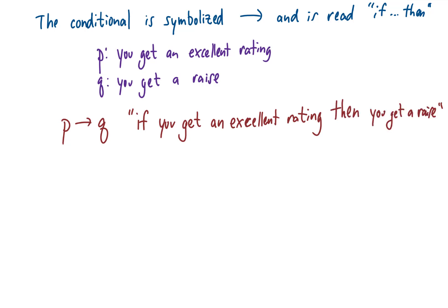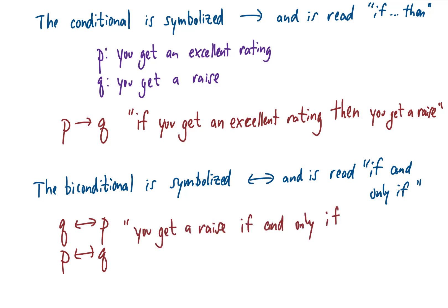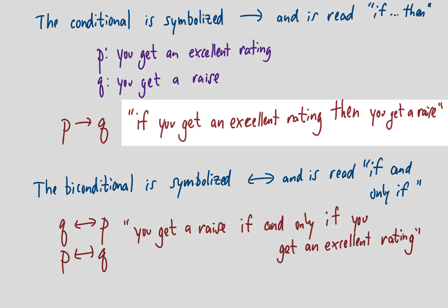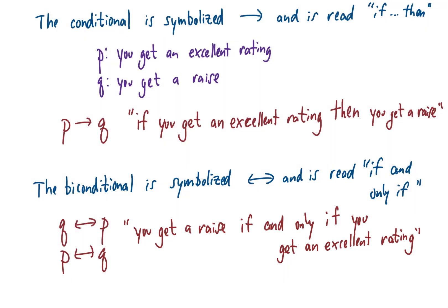There's one more connective called the biconditional, symbolized by a double arrow and read as 'if and only if'. Writing q ↔ p is the same as p ↔ q, and either way it says 'you get a raise if and only if you get an excellent rating'. There's a subtle difference: the conditional leaves open the possibility that you could get a raise another way, but the biconditional means the only way to get a raise is by getting an excellent rating, and if you do, you will get one.